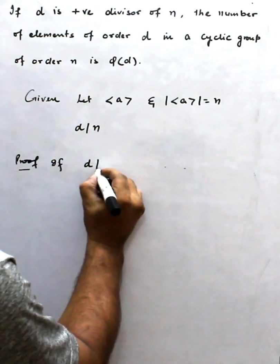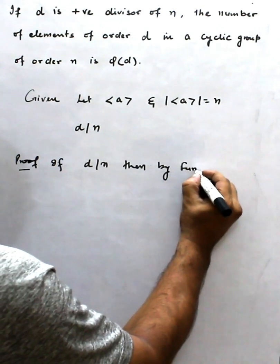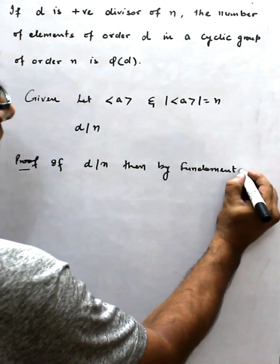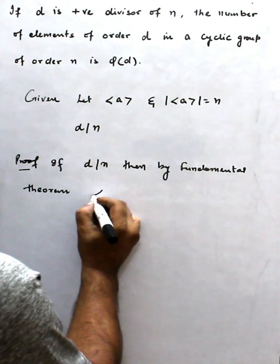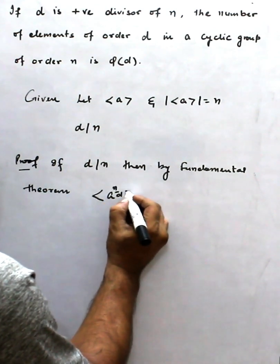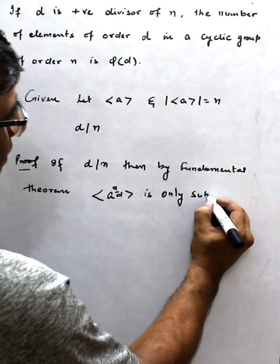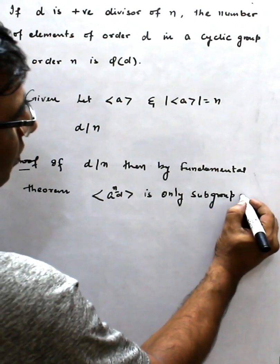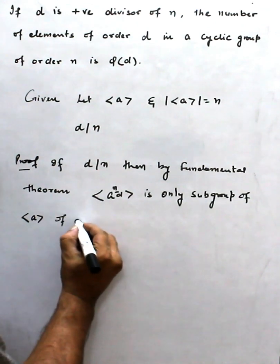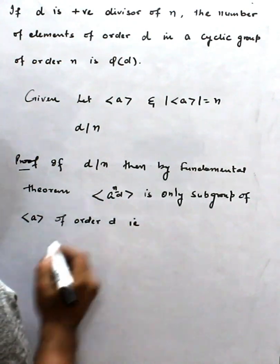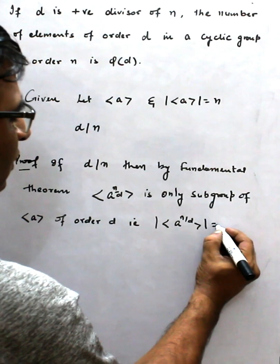Then by the fundamental theorem, <a^(n/d)> is the only subgroup of the cyclic group <a> of order d. This means the order of <a^(n/d)> is equal to d.